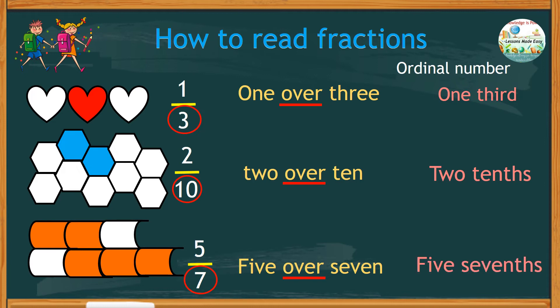So, you might probably be wondering why tenths and sevenths we added s. That is because if you look at the number of parts shaded or the numerators, two and five, they are more than one.